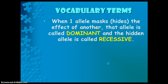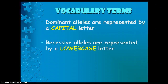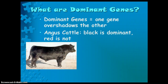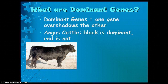When one allele masks or hides the effects of another allele, that allele is called dominant, and the hidden allele is called recessive. Dominant alleles are represented by a capital letter, while recessive alleles are represented by a lowercase letter. Dominant genes are when one gene overshadows the other. When we have black as dominant and red as not, a black cow can actually have two different genotypes, even though its phenotype is going to be black.